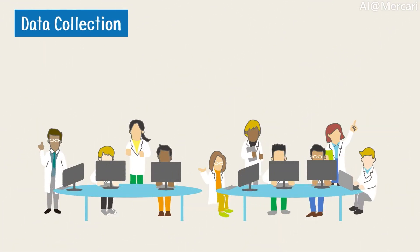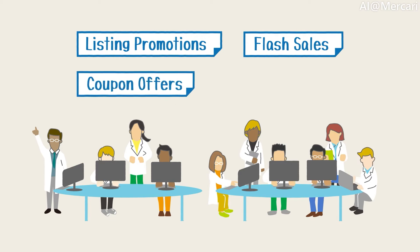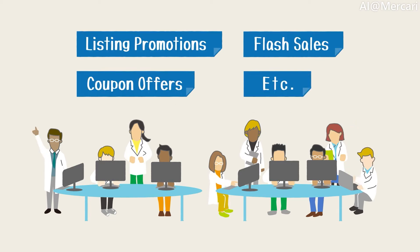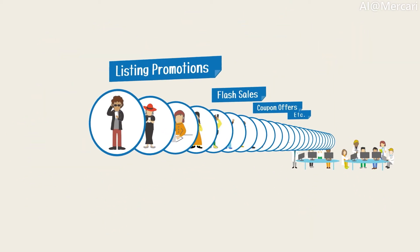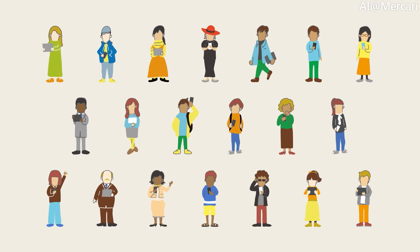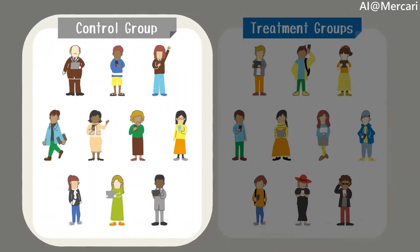Mercari utilizes many types of campaigns. For example, listing promotions, flash sales, coupon offers, etc. In order to train our models, we need to collect data from these campaigns. For each campaign, the users are split into treatment groups, that is, those who received campaign notifications, and the control group who do not receive the offers and perform A-B testing.